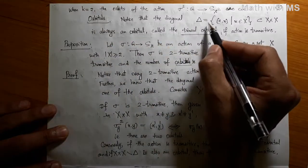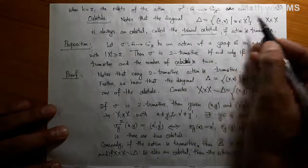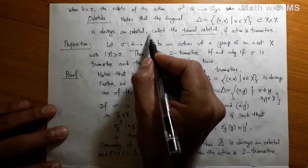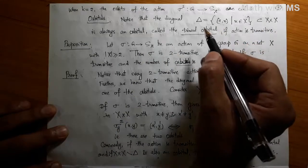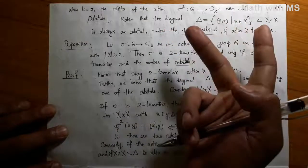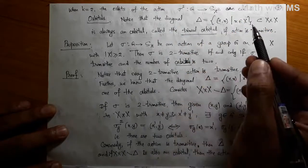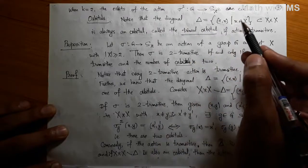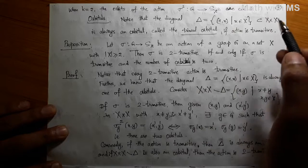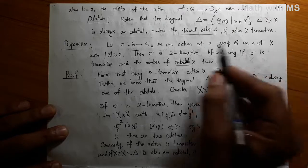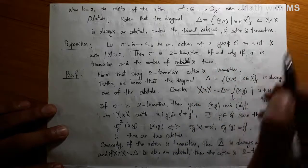Specializing to K equal to two, the orbits of the action sigma two from G to the symmetric group on X cross X are called orbitals. They are going to play a role in our study of permutation representations. Notice that the diagonal delta, consisting of pairs (X, X) for X in X, is always an orbital provided the action is transitive. This is called the trivial orbital, and it always exists as long as your action is transitive.